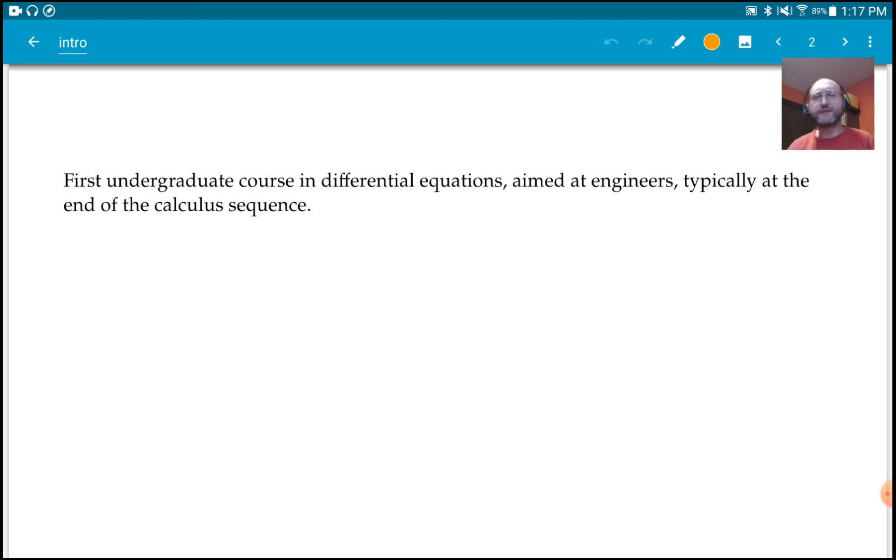So what is this course? It's basically a first undergraduate course on differential equations. Usually in an engineering program, this would be one of the math classes that you need to take, but it doesn't have to be just engineers. It could be mathematicians or other technical fields. It generally comes at the end of the calculus sequence. You'd have calculus one, two, three—one variable calculus, then several variable calculus in calculus three, and often the next class is differential equations.